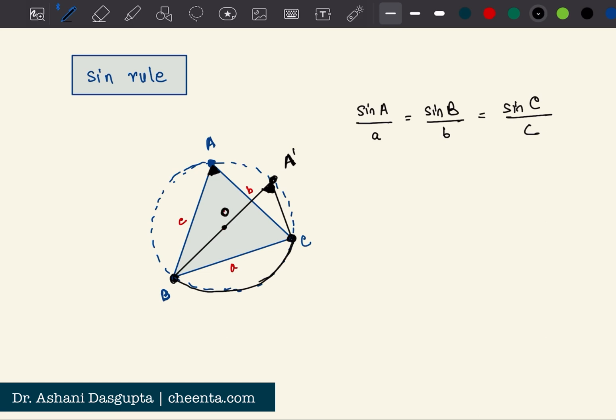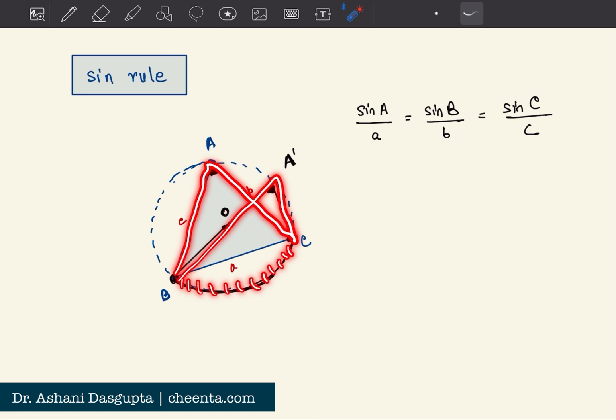Angles subtended by the same arc in the circumference create equal angles. That's a fundamental theorem in geometry.